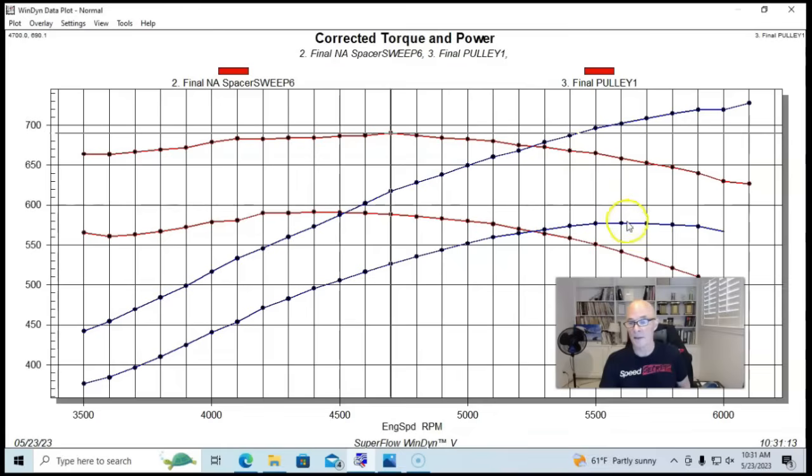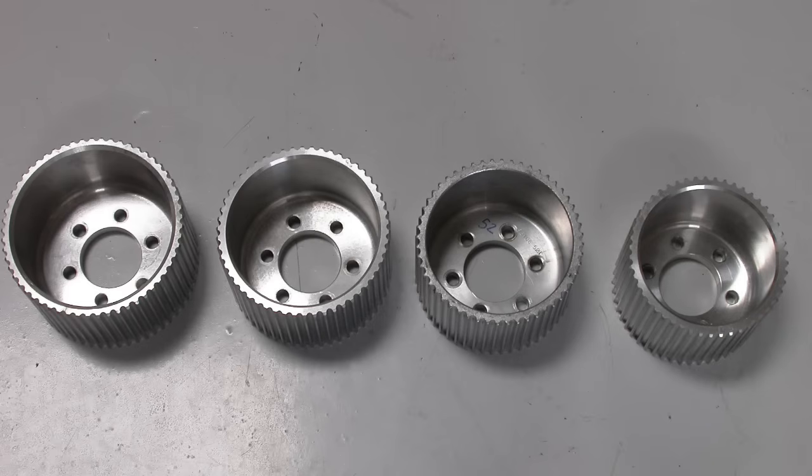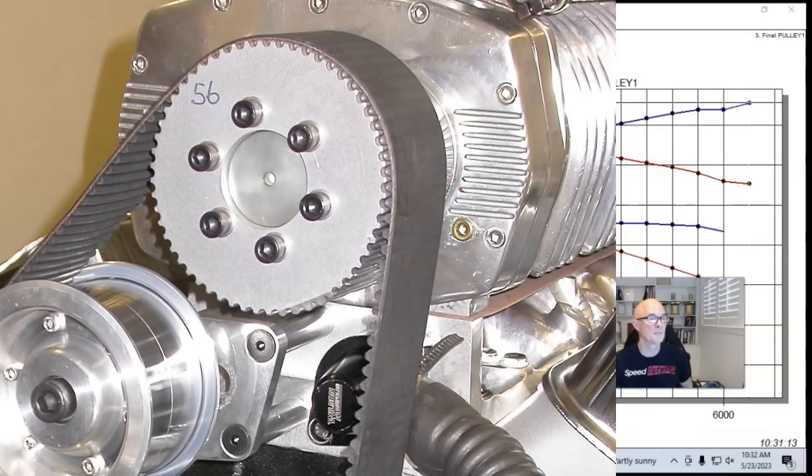So right off the bat, the blower went from 577 to 728. We already picked up a pretty good bit of power, even at just 4.3 pounds, but obviously we're not done there. So let's try another pulley, shall we? That's the nice thing about having a supercharger. The roots blowers just swap pulleys, put new ones on.